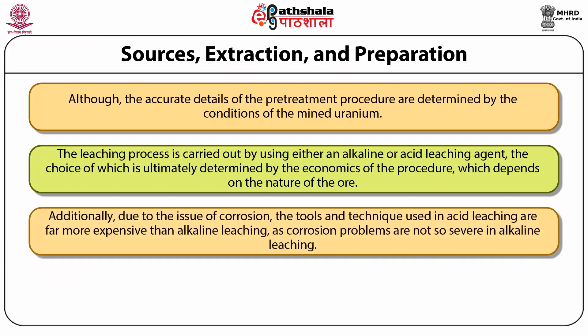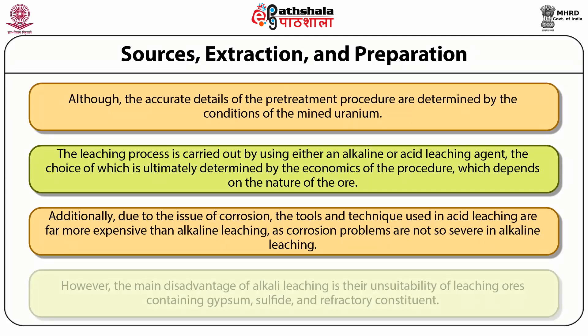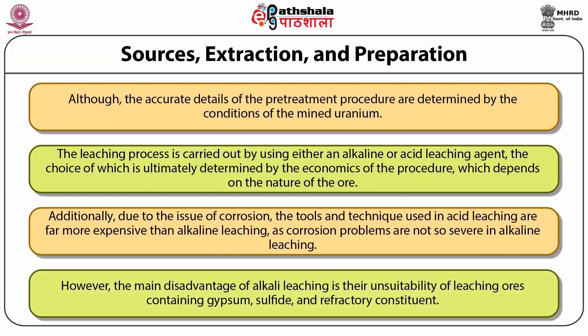Acid leaching avails higher recovery of metallic uranium than alkaline leaching. However, acidic leaching cannot be used for ores that contain magnesium or calcium carbonates, as these compounds react with acid leaching agents causing excessive acid wastage. Additionally, due to corrosion issues, tools used in acid leaching are far more expensive than in alkaline leaching. The main disadvantage of alkali leaching is its unsuitability for leaching ores containing gypsum, sulfide and refractory constituents.